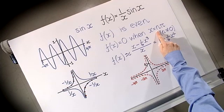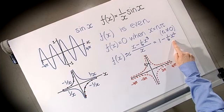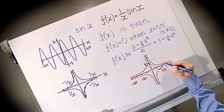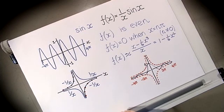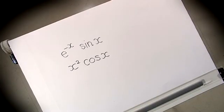In summary, we have a function that's even, that is zero when x is an integer multiple of π (except at x = 0 where it's undefined), and near x = 0 looks like 1 - x²/6. So now we can sketch the function. That's our sketch of f(x) = sin(x)/x. In this video we've seen two examples of sketching a function that's a product of two other functions. Why don't you try sketching these functions yourself? You can check your sketches with a computer or a calculator.